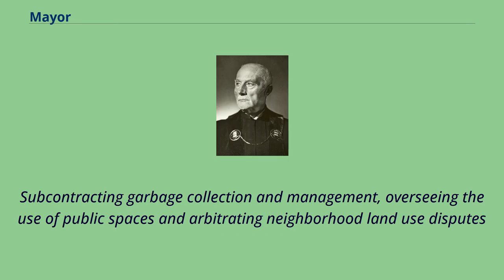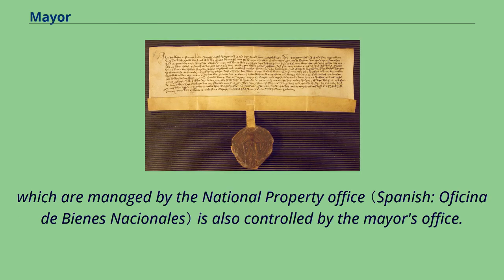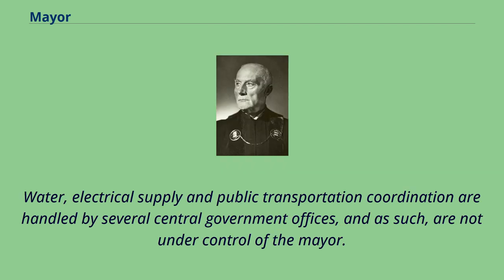Subcontracting garbage collection and management, overseeing the use of public spaces, and arbitrating neighborhood land-use disputes — which are managed by the National Property Office — are also controlled by the mayor's office. Water, electrical supply, and public transportation coordination are handled by several central government offices, and as such are not under control of the mayor.